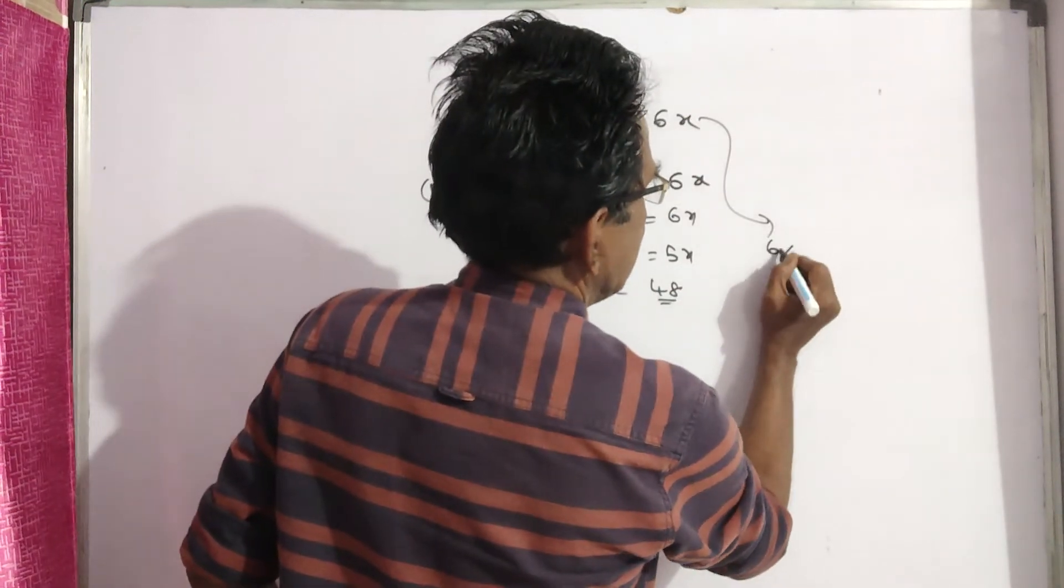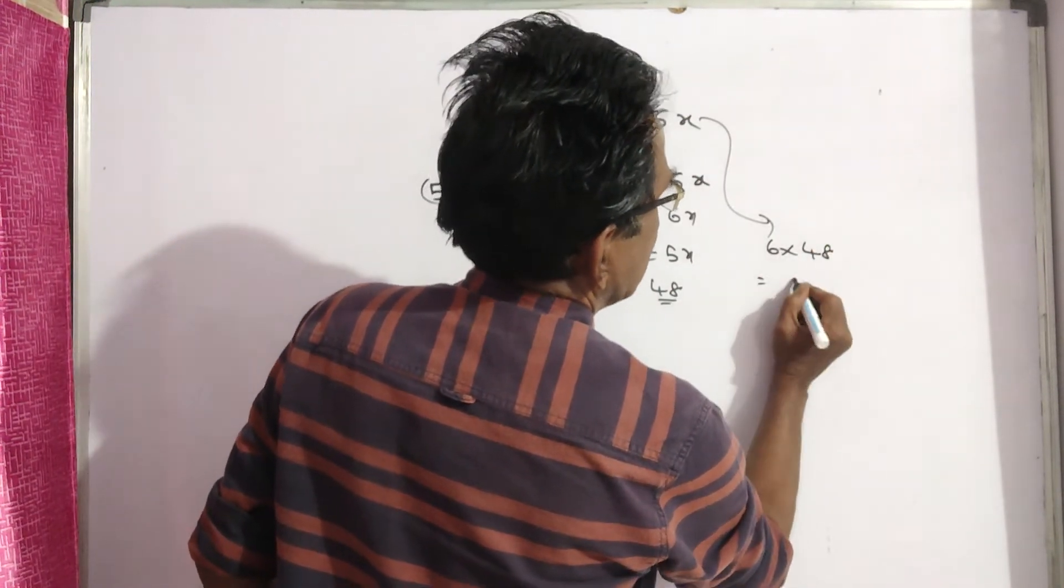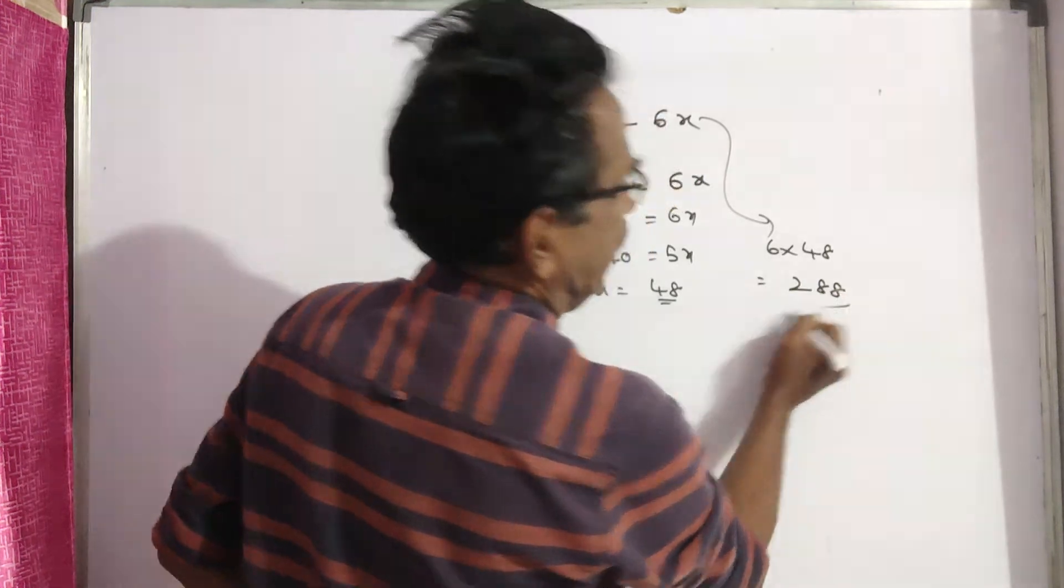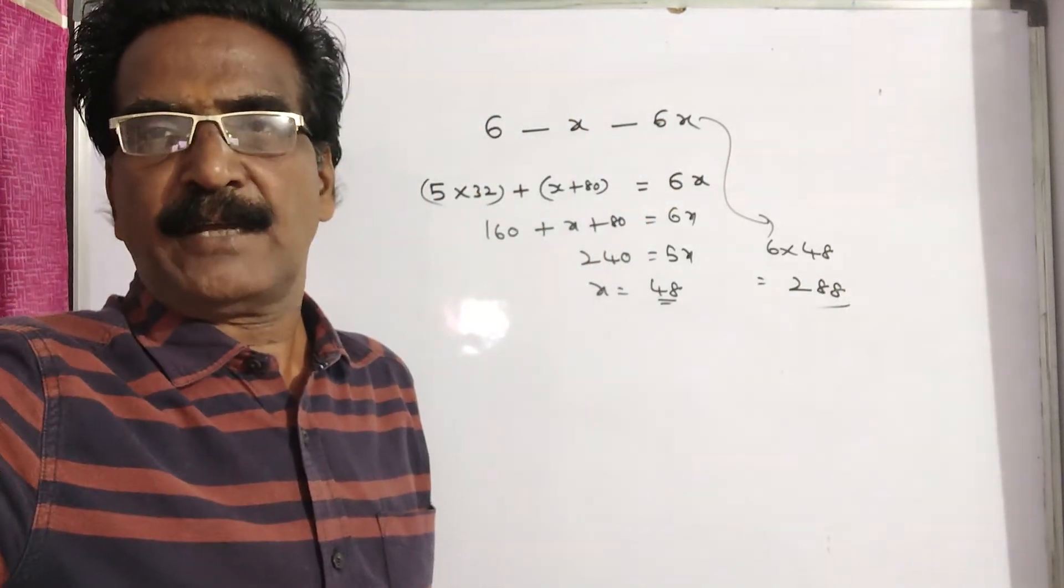So the total money spent, 6 times 48, equals 288 rupees. Okay friends, thank you, have a nice day.